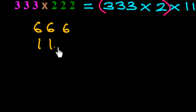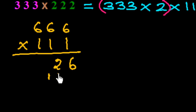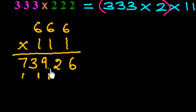We multiply 666 × 111. First we write down 6. Then we add two 6s: 6 + 6 = 12, write 2 and carry 1. Next, 6 + 6 + 6 = 18, plus 1 carry = 19, write 9 and carry 1. Then 6 + 6 = 12, plus 1 = 13, write 3 and carry 1. Finally, 6 + 1 = 7. So the answer is 73926.